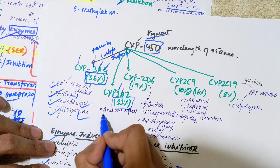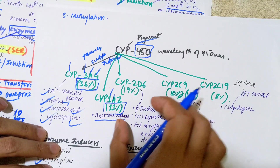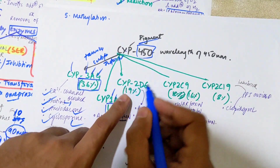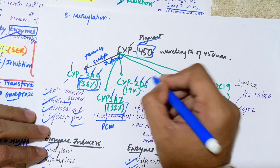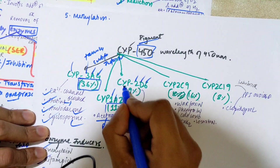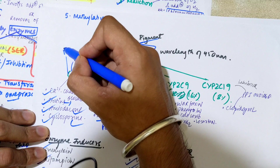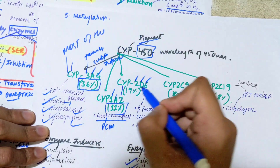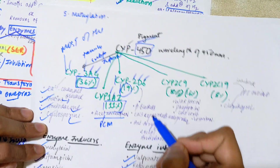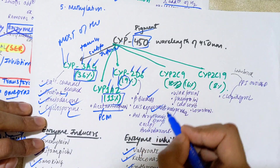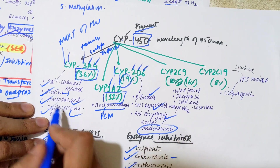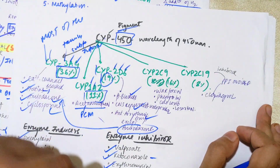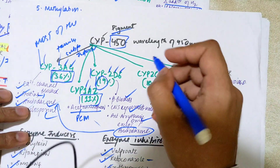CYP1A2 — family 1, subfamily A, isoform 2 — accounts for approximately 11% of drug metabolism; acetaminophen (paracetamol/PCM) is an example substrate. CYP2D6 — family 2, subfamily D, isoform 6 — is the second most abundant after CYP3A4, accounting for about 19% of drug metabolism. Drugs metabolized by CYP2D6 include beta-blockers, CNS depressants, and anti-arrhythmic drugs (except amiodarone, which is metabolized by CYP3A4).